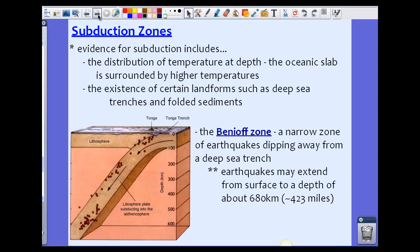We see this along the trenches around the globe where these are basically the landforms created by subduction. We also have things called the Benioff zones, narrow zones along the dip of the subduction zone in this particular area. These places are known for earthquakes that can extend from the surface down to about 680 kilometers, which is about 423 miles deep.